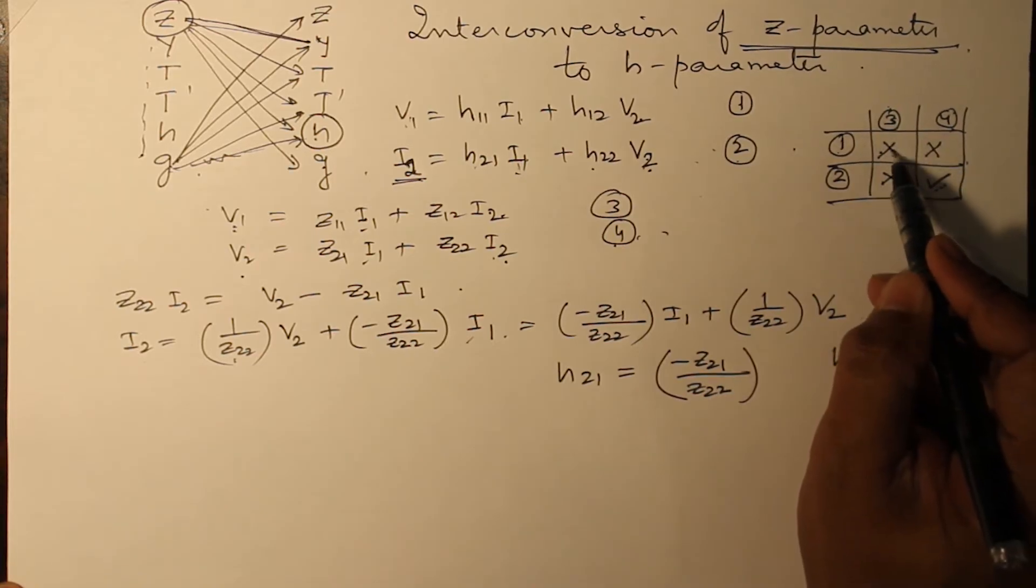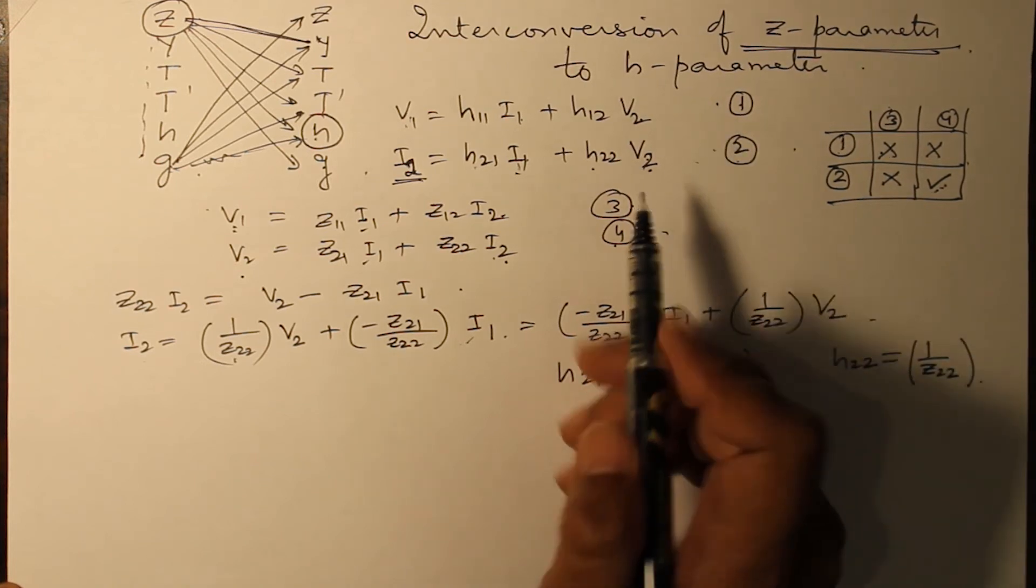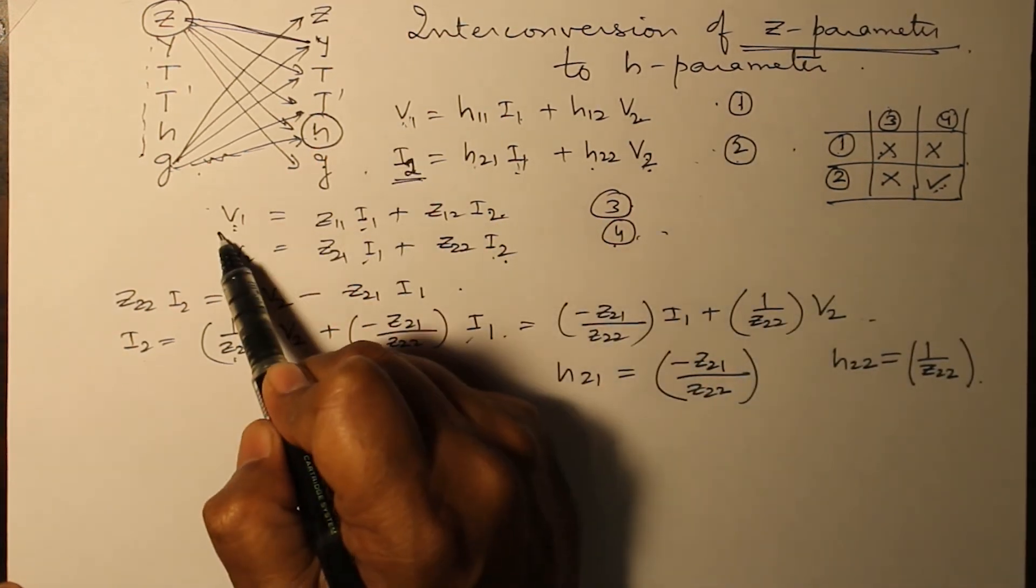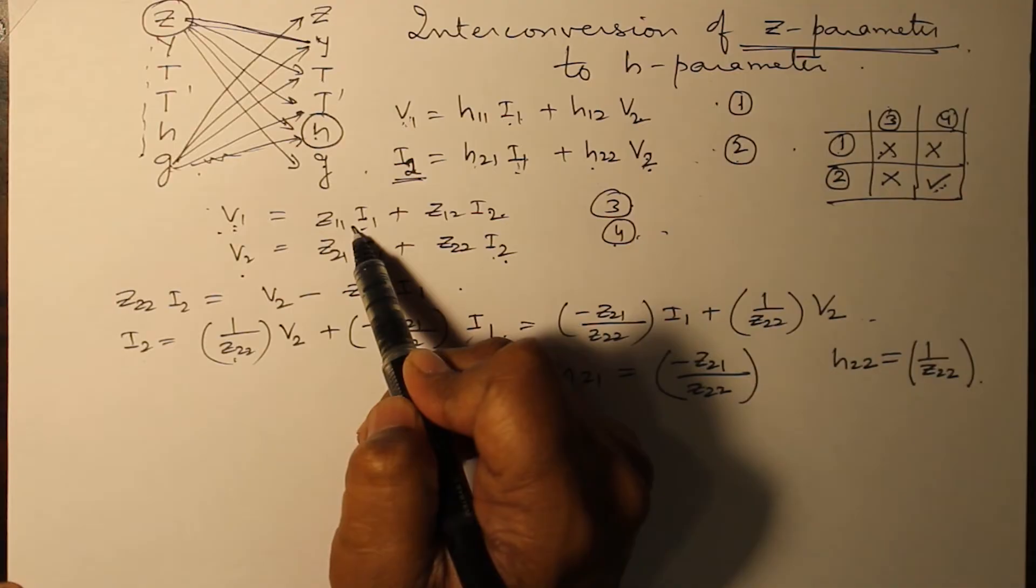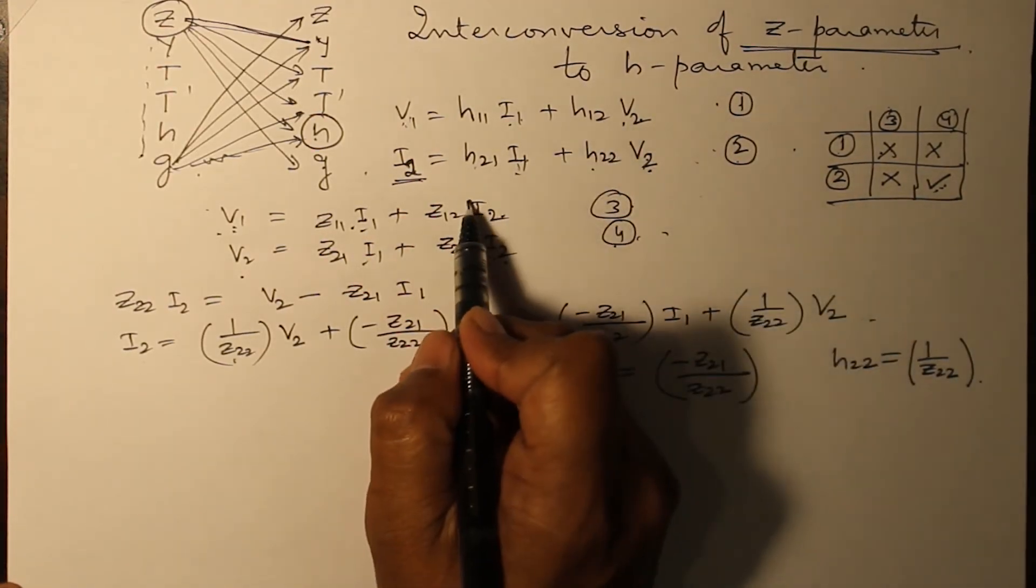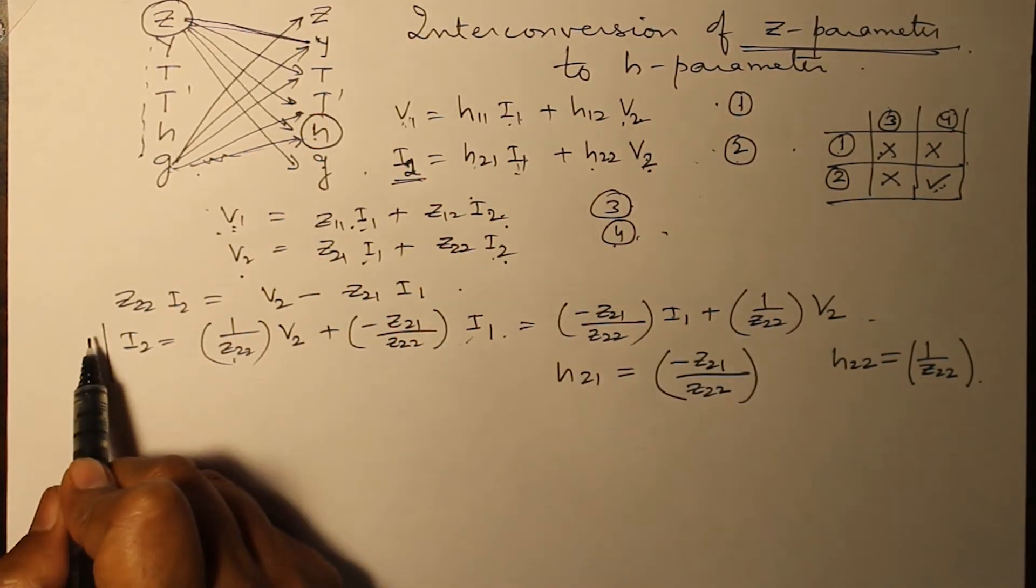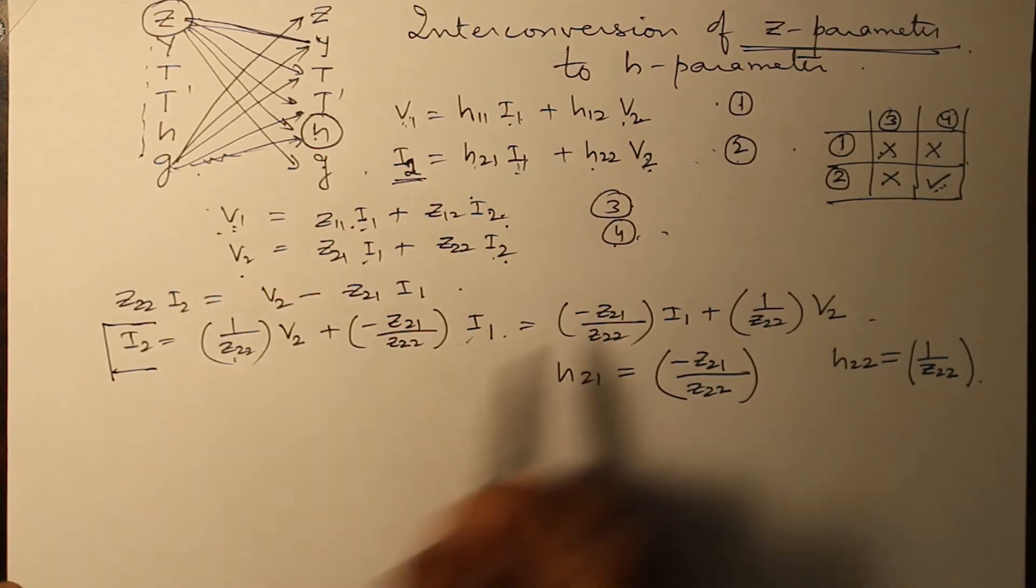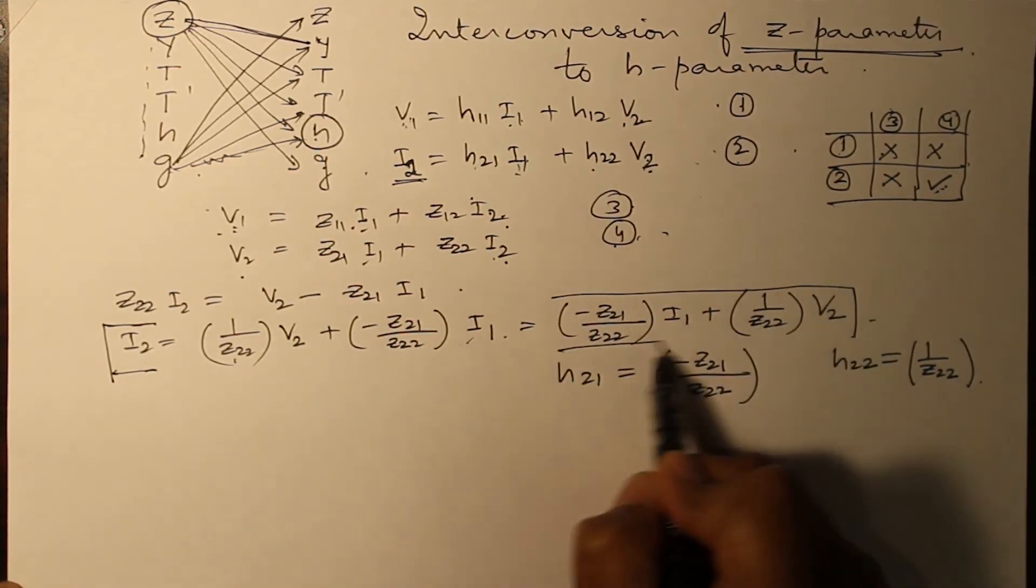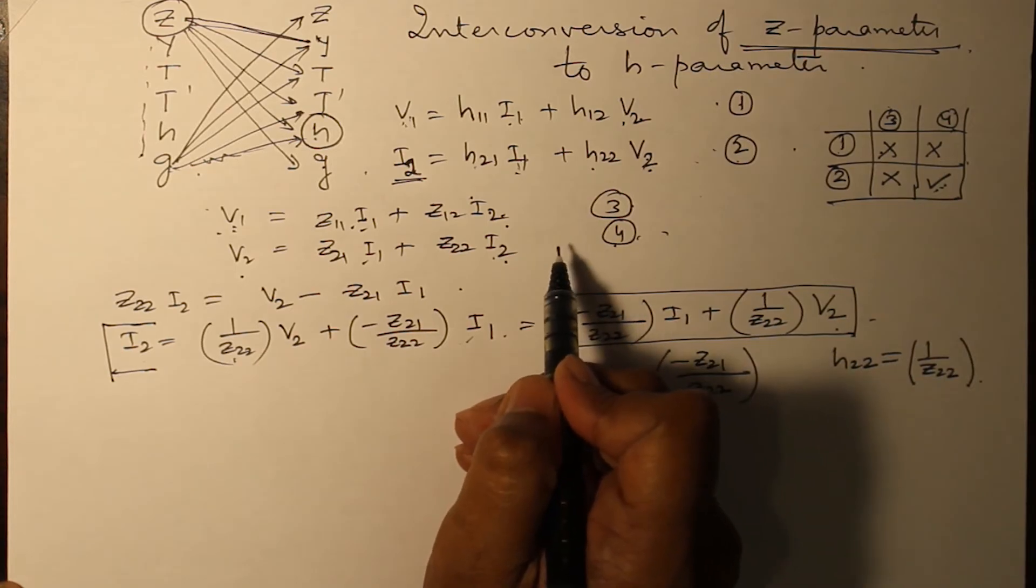Now we will be writing three as in one, but here we have a problem. What is the problem? V1, V1 is common. I1, I1 is common. But here we need to have V2, but there is a term I2 present. So replace that I2 by this value and put it here in equation three.